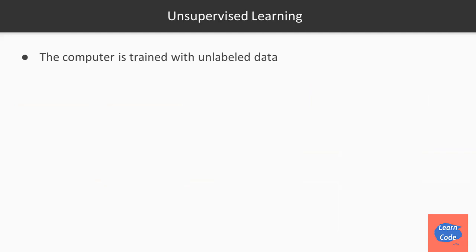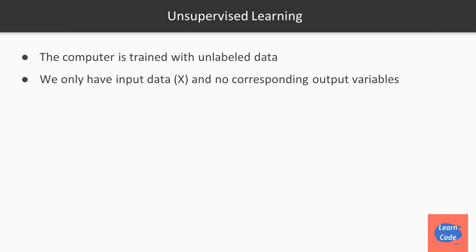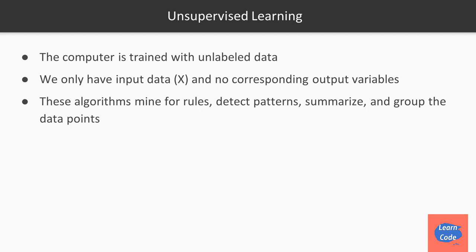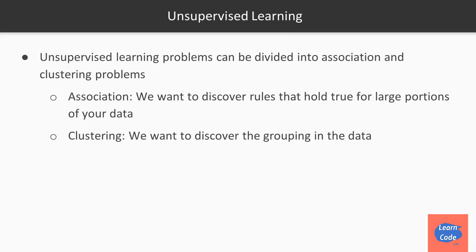Another type is unsupervised learning. In unsupervised learning, the computer is trained with unlabeled data — we have input data but no corresponding output variable. These algorithms mine for rules, detect patterns, or summarize the results. Unsupervised learning can be divided into two parts: association, where we discover rules that hold true for large portions of data, and clustering, where we group similar data together.